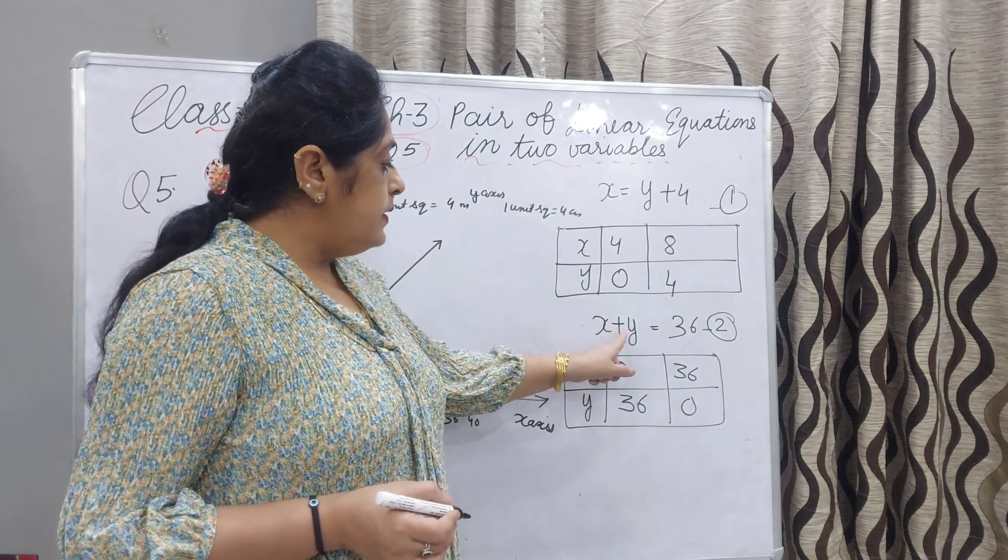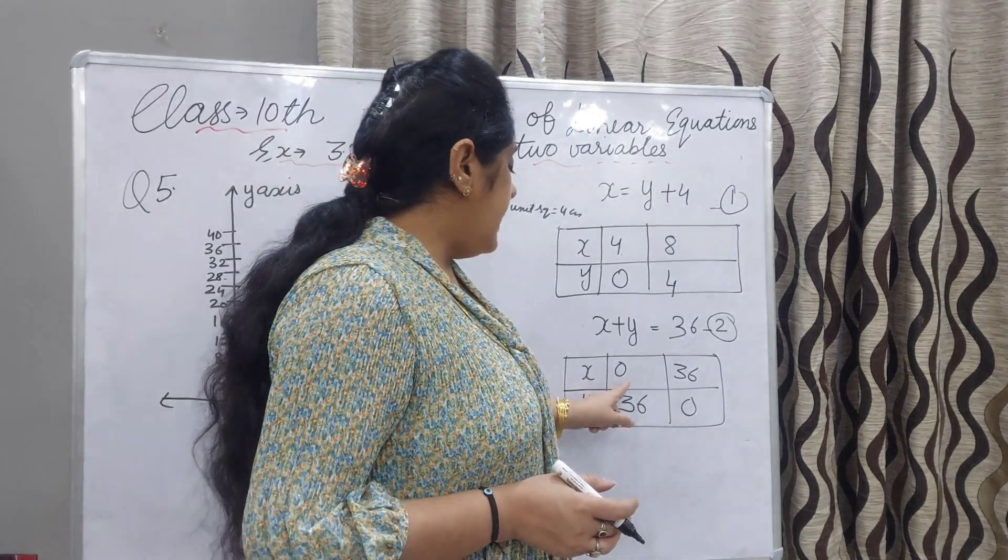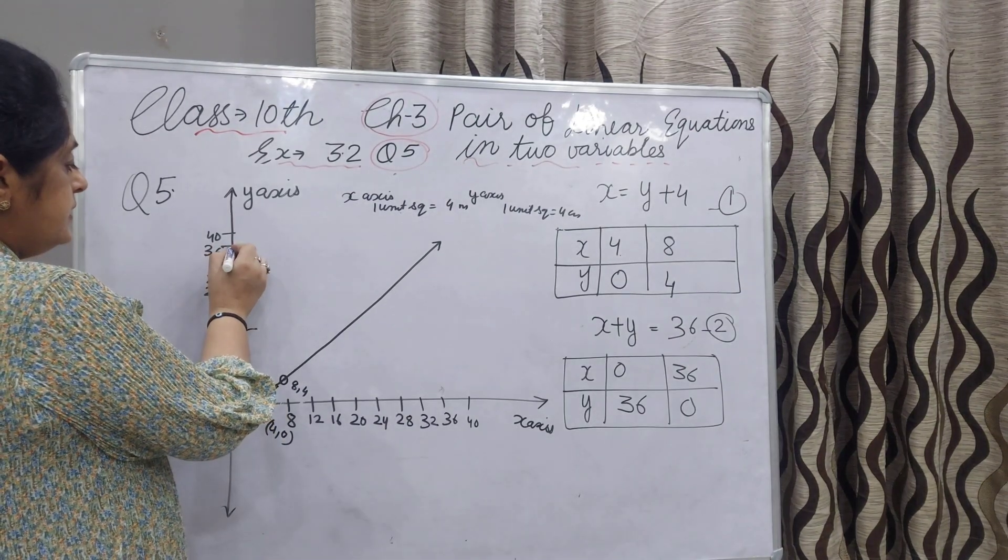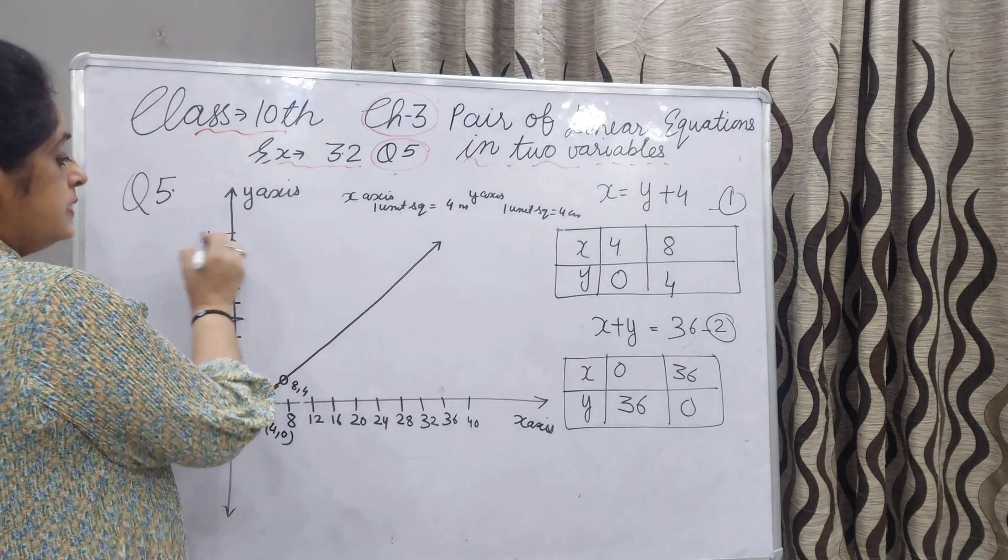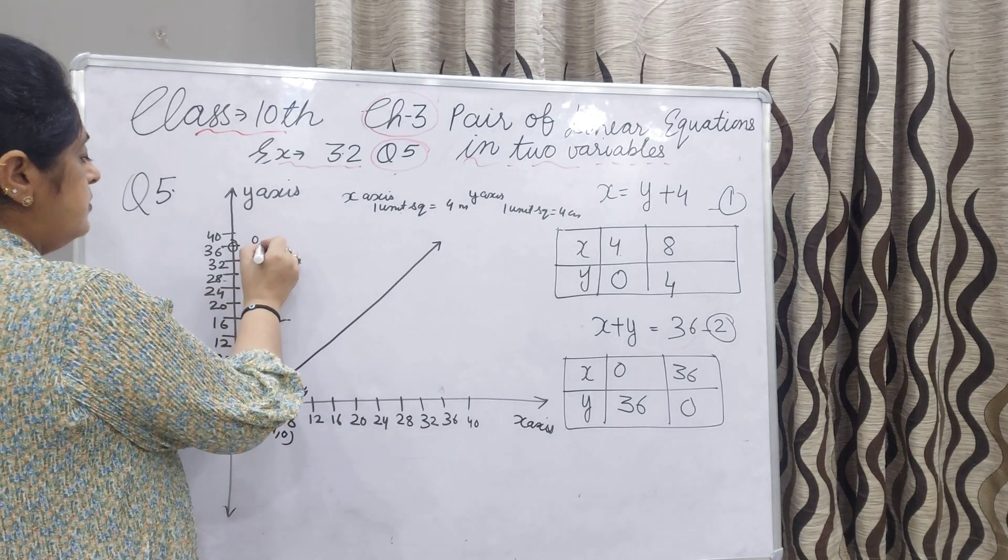Now, second equation: x plus y is equal to 36. First x 0 and y 36. x 0, y 36 on y axis. Here this point is 0 and 36.